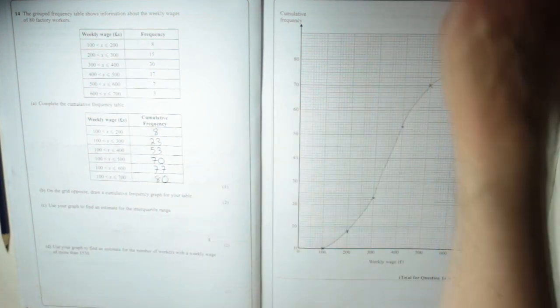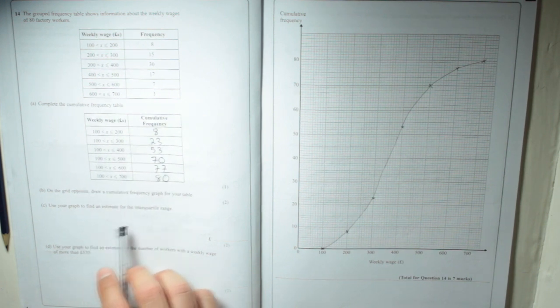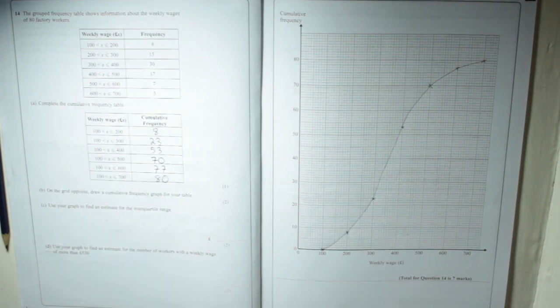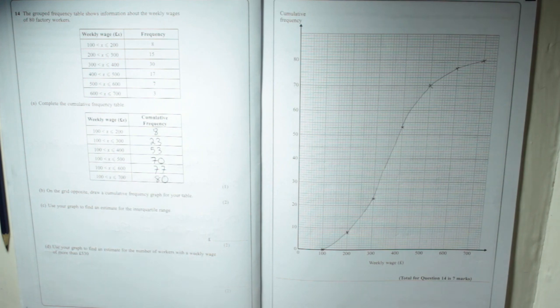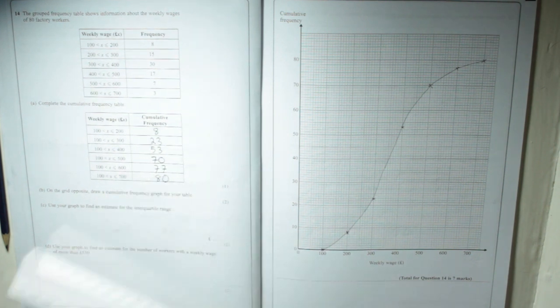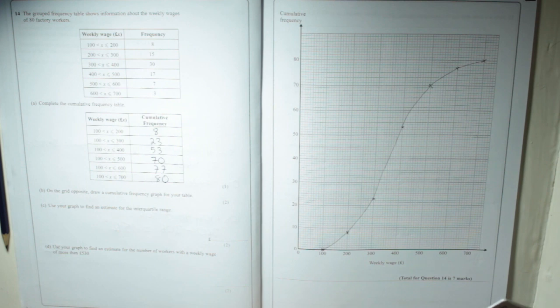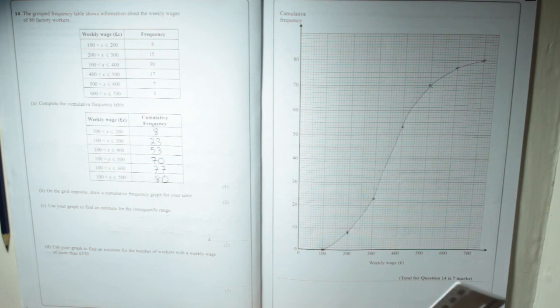Now, part C. Use your graph to find an estimate for the interquartile range. And to do that we need a ruler. So, interquartile range is basically the distance between the lower quartile and the upper quartile.